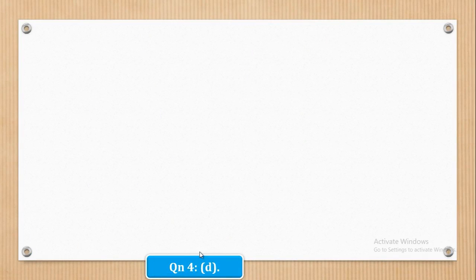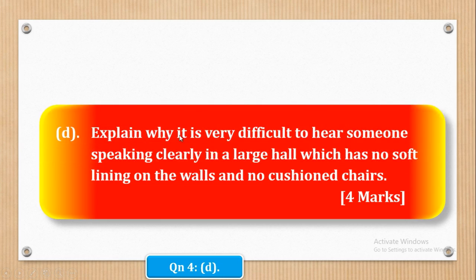Now we shall go to part D. Part D says: explain why it is very difficult to hear someone speaking clearly in a large hall which has no soft lining on the walls and no cushioned chairs. That is four marks.